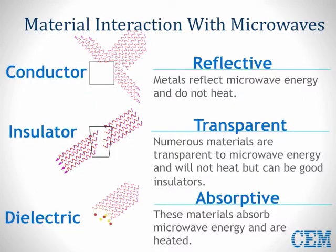When microwaves come into contact with materials, they can behave in different ways. We classify the materials into three general categories. Conductor materials are metallic materials that reflect microwave energy and do not heat — think of the metal walls of a microwave oven. Insulators are materials that are transparent to microwave energy but hold the heat generated by the collision energy. Teflon, glass, and quartz are good examples, which is why these are the primary materials used in our digestion vessels.